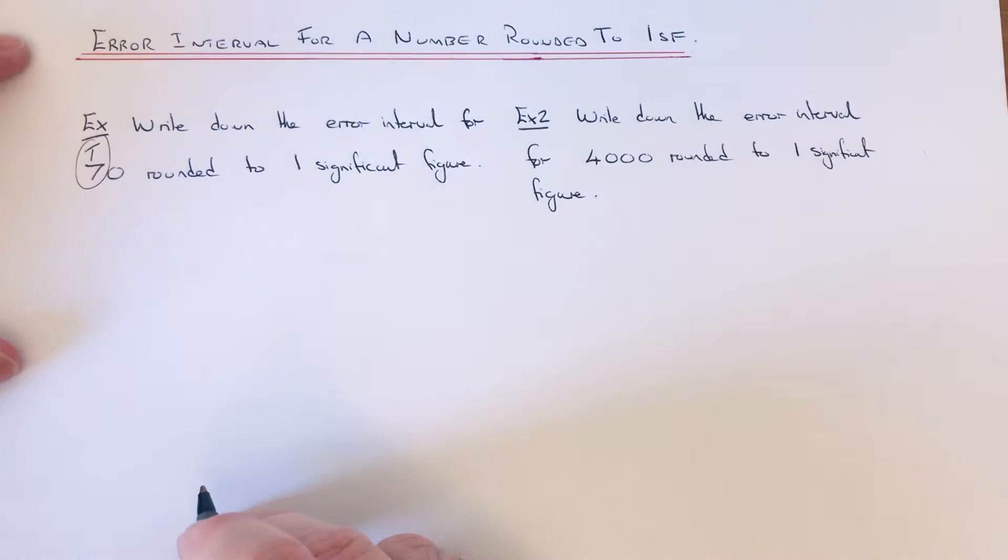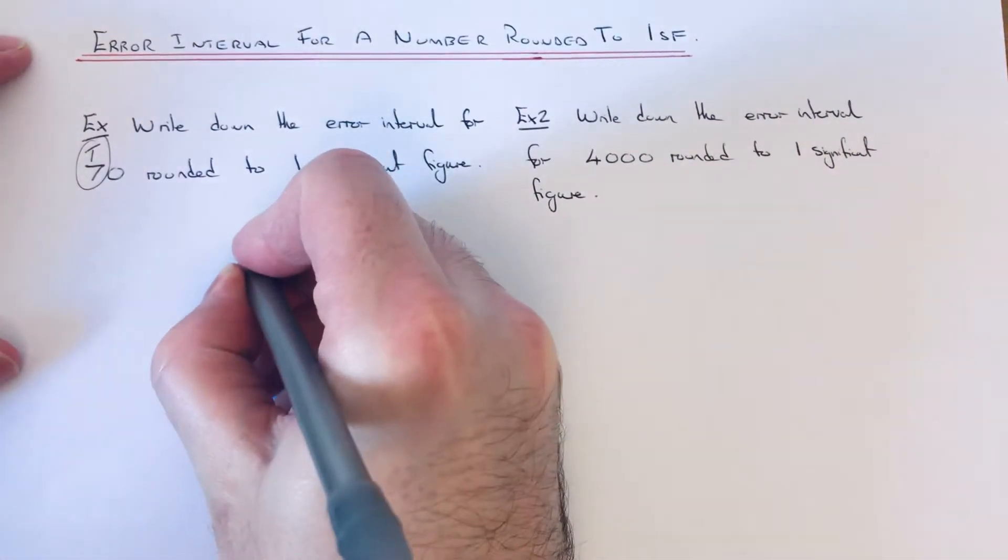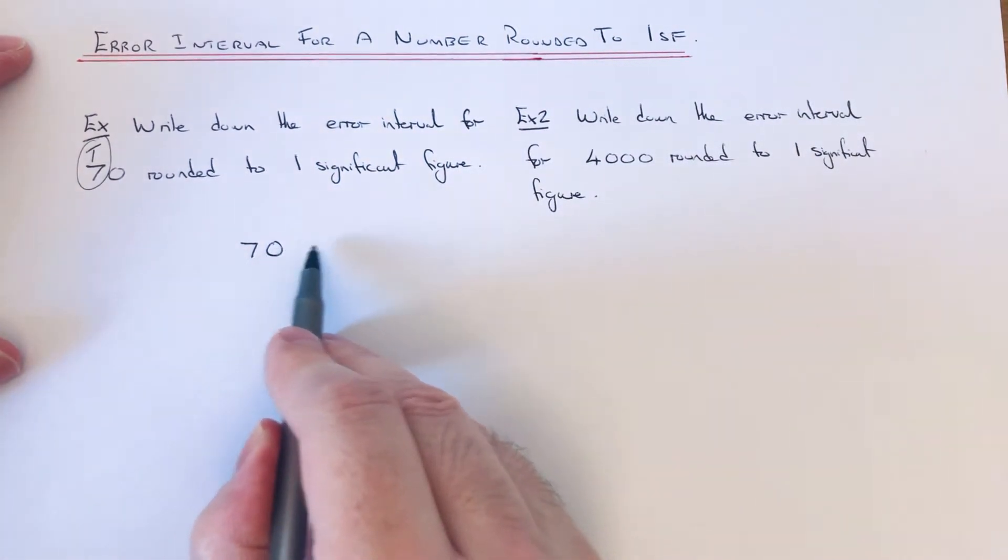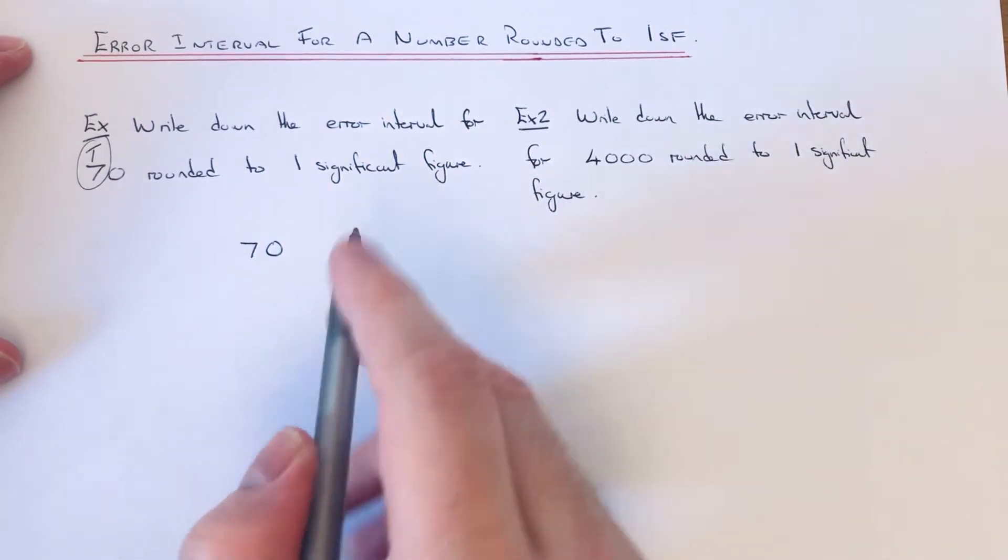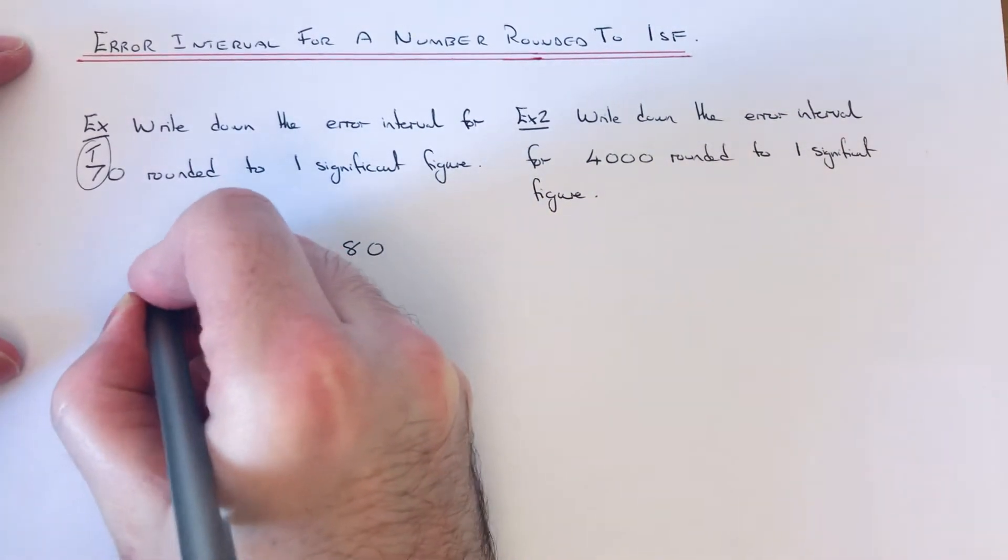Okay, so it was rounded off to the nearest ten. So that means our scale was going up in tens. If we write down the value above the scale, 70 add 10 is 80, and the number below 70 will be 60 on our scale.